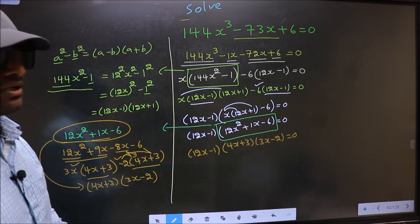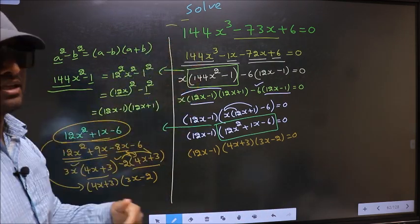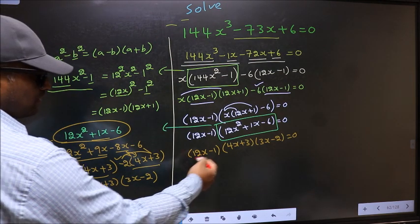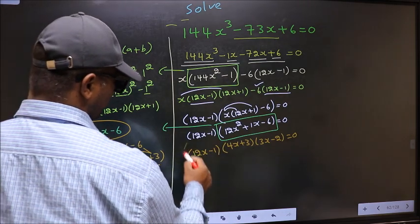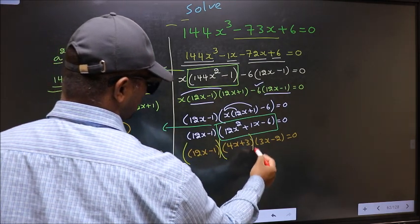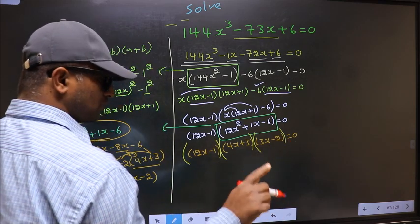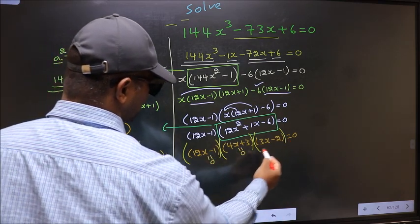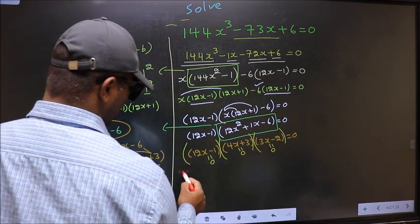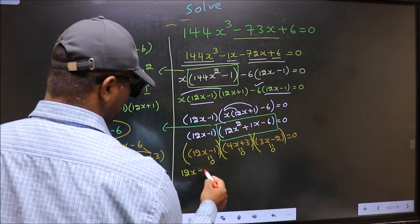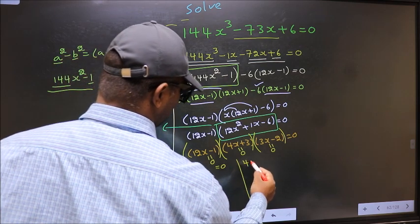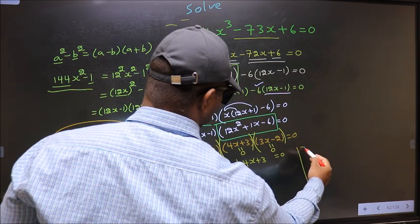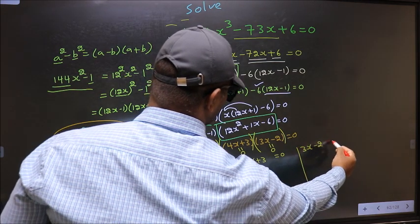We need to get the values of x, and we have a product of brackets equal to 0. So to get the x values, we equate each bracket to 0: 12x minus 1 equal to 0, 4x plus 3 equal to 0, 3x minus 2 equal to 0.